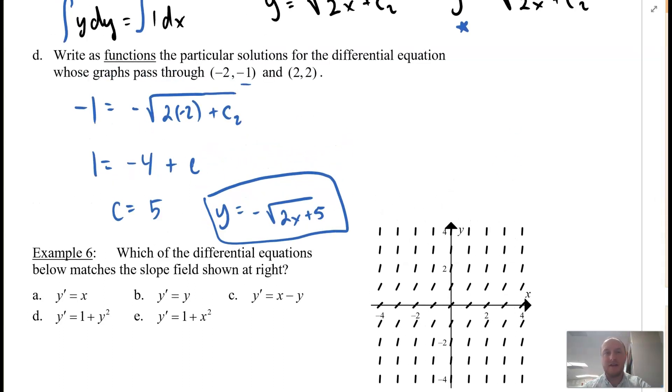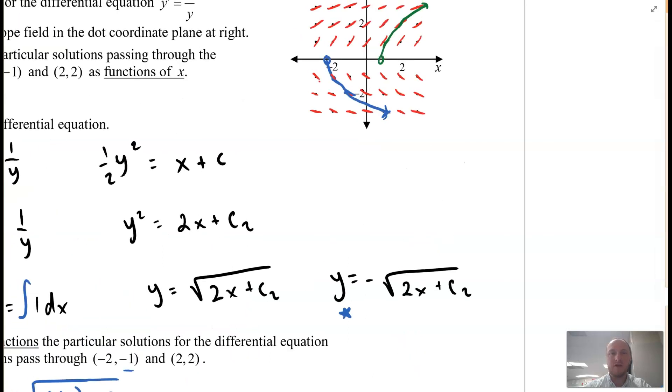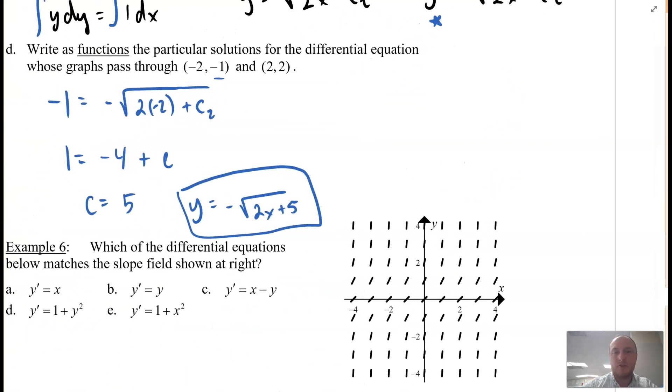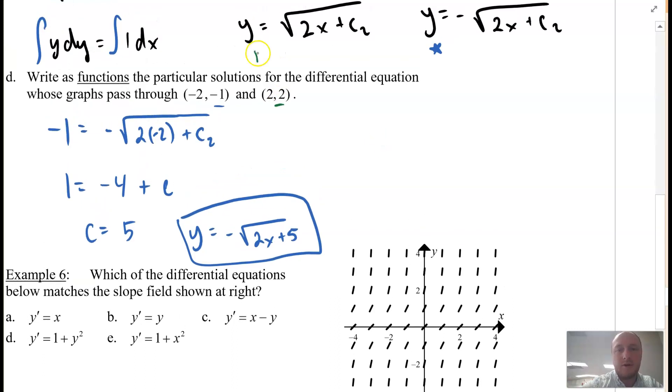And then for the second equation up here, which I did in green, passing through the point (2, 2). Again, the y value is positive, so we're going to use this equation. So 2 = √(2x + c). Square both sides, 2x. Sorry, I forgot to plug in 2. 2 times 2 gives us 4 + c, and thus c = 0. So y = √(2x), and there's that particular solution.